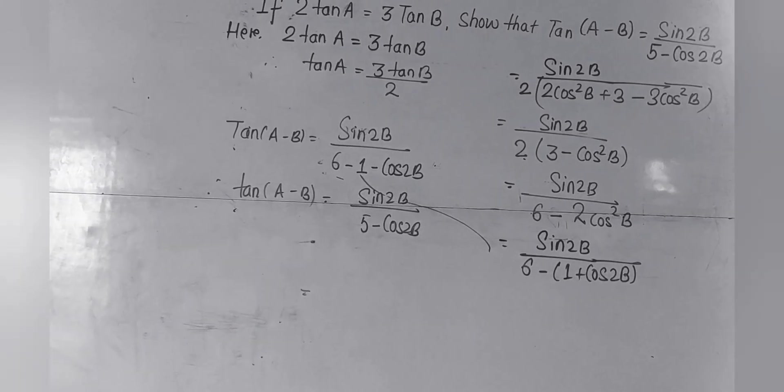Now we are starting the next problem. We have cos³a·cos3a + sin³a·sin3a. This is in the form of cos³a and sin³a. We are going to write the formula: sin3a = (3sinA - sin3A)/4. Similarly, the formula for cos³a is used. We put the formula of cos³a and sin³a, then multiply: cos3a × cos3a = cos²3a, and 3cosA × cos3a = 3cosA·cos3a, divided by 4.